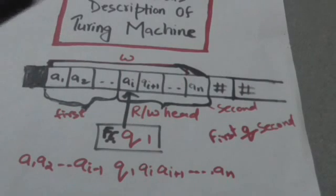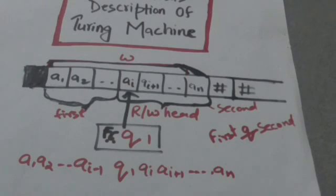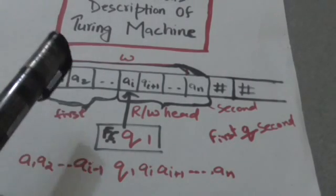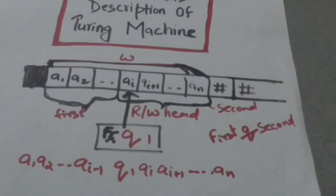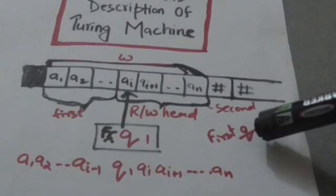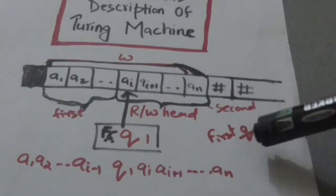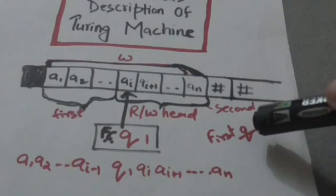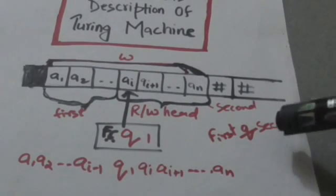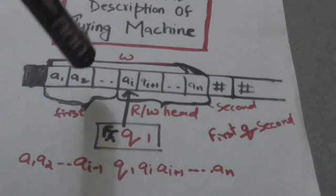Consider the string of tape symbols on the tape from the leftmost non-blank tape symbol to the rightmost non-blank tape symbol. Let this string be W. Now divide this string W of tape symbols into two parts. The first part is the substring of tape symbols of W which are to the left of the read-write head. The second part is the substring of the remaining tape symbols of W. The instantaneous description is written by first writing the first part of W, then the current state of the Turing machine, then the second part of W.